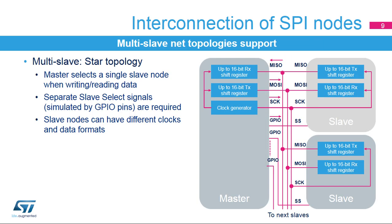When the SPI network includes more than one slave, a star topology is commonly used. The master communicates with one slave at a time since only one slave can transmit data back to the master through the common MISO pin. In this topology, a separate slave select signal from the master has to be provided to each slave node. Thanks to separate slave select signals, SPI data and clock format can be adapted for each slave if the multiple slave nodes do not have a common configuration.